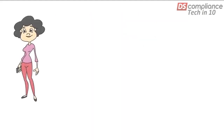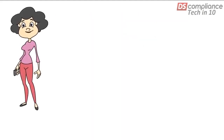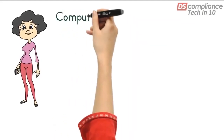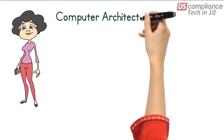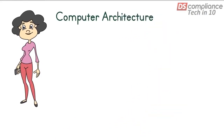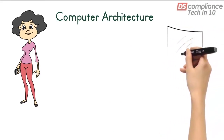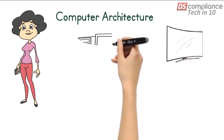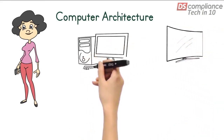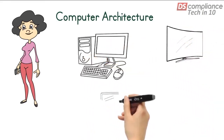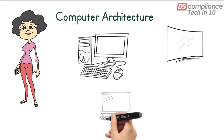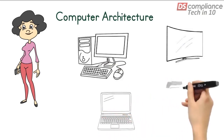We said that all these smart devices share basically the same architecture. In essence, they all are computers in one form or another. So what is this architecture, and what are the components that make up a computer system?